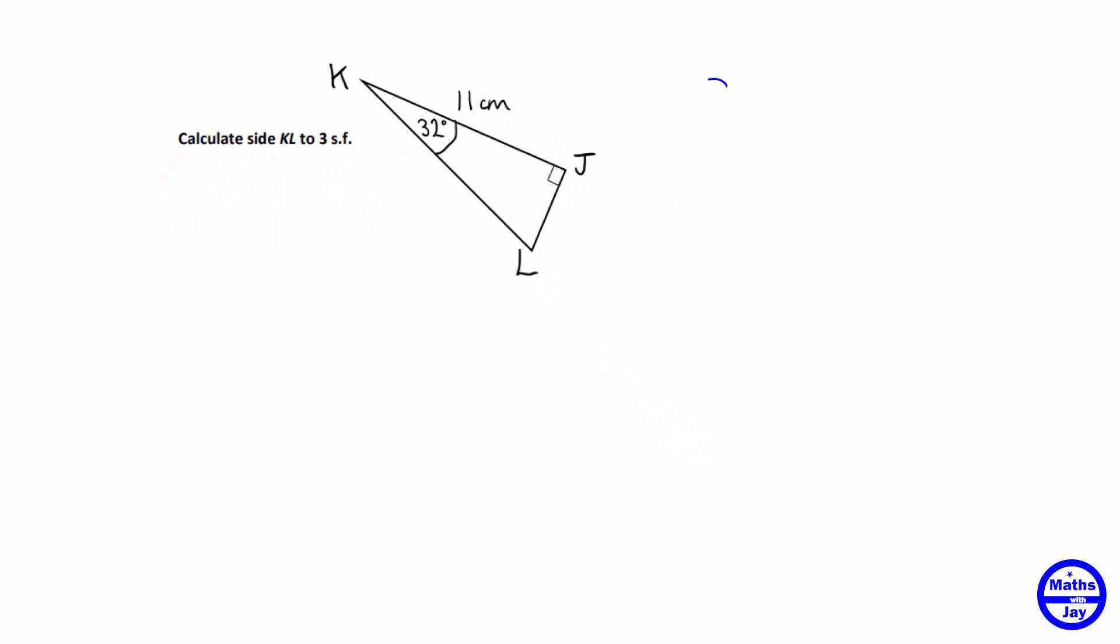So let's just write down sine is opposite over hypotenuse, cosine is adjacent over hypotenuse and tangent is opposite over adjacent.